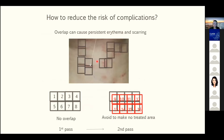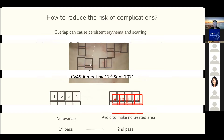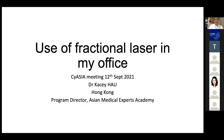Another protocol point: overlap can cause persistent hyperpigmentation, so I recommend a no-overlap technique. The first pass uses no overlap, and the second pass also uses no overlap but covers a different area, to avoid any twisted or over-treated area.